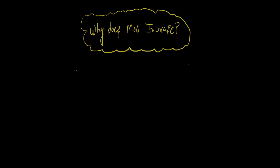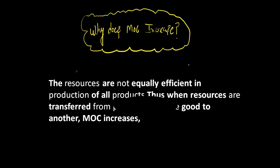The simplest reason why MOC increases is because the resources are not equally efficient in production of all the products. Thus when resources are transferred from production of one good to another, MOC is bound to increase. For better reference, you can watch our previous video on this topic and it will be clear to you.